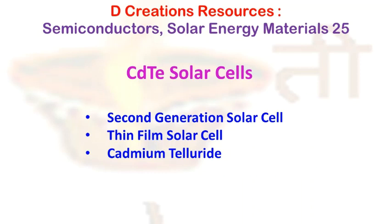Another system is gallium arsenide. Here, the efficiency is higher compared to CdTe solar panels, but at the same time they are very expensive. Gallium arsenide is less toxic than CdTe. In terms of application, gallium arsenide solar panels are more preferred for space applications.